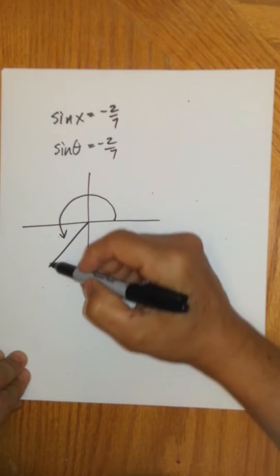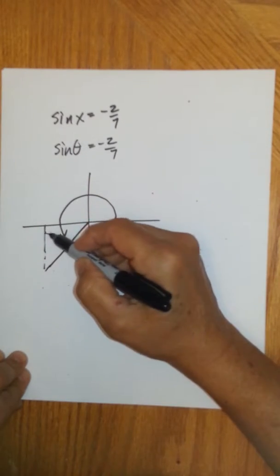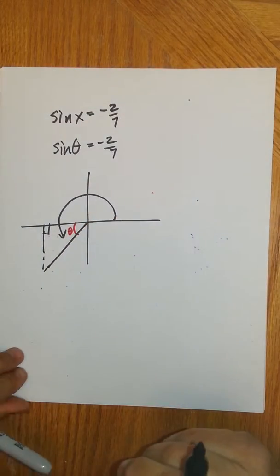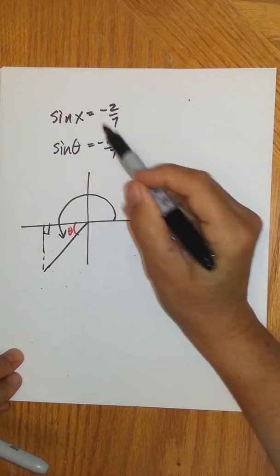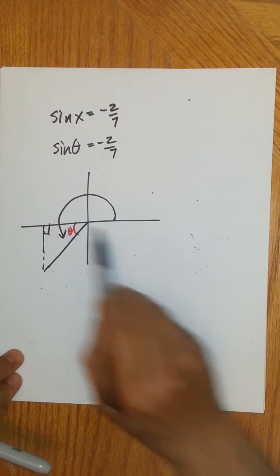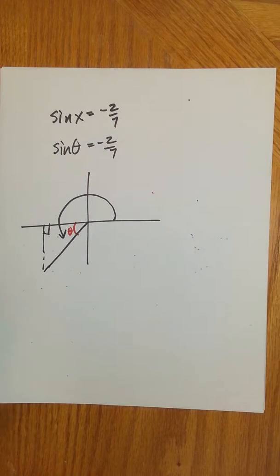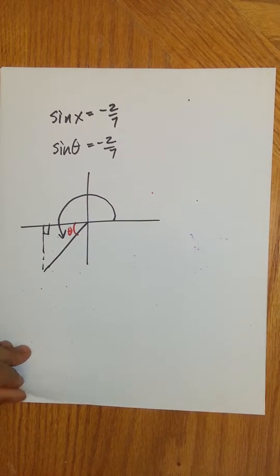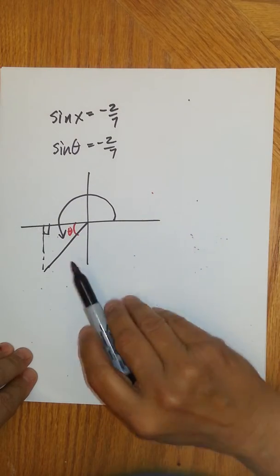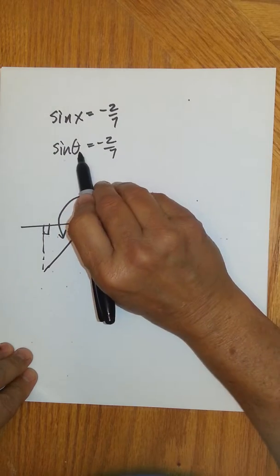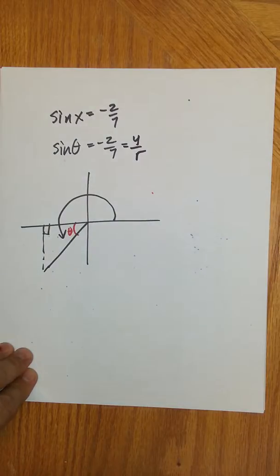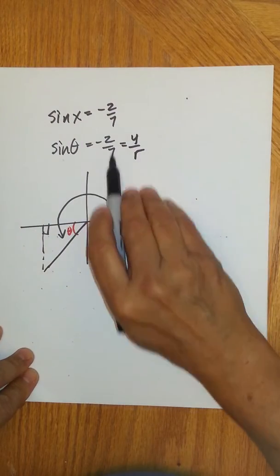So I have an angle in quadrant three, and then I drop to the x-axis. This is my reference angle, theta. Be careful not to confuse this x, which is a rotation, with the x which is horizontal movement. If it's the input to a trig function, you know it has to be an angle. Essentially, what we're going to do is build a right triangle. The definition of the sine of any angle in standard position is y over r.